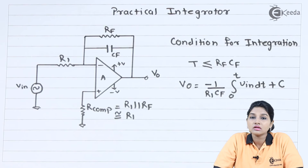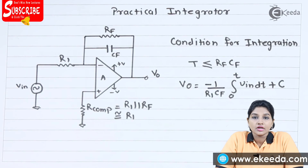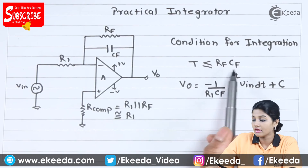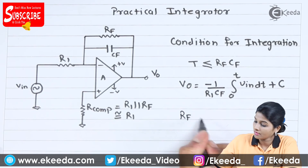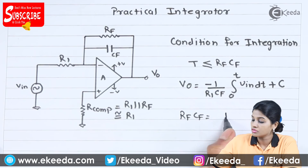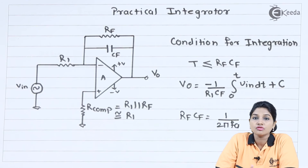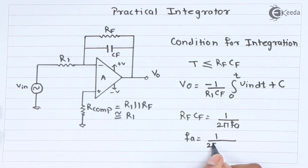Now let's look at the condition for proper integration. For proper integration of an input signal having time period T, the input signal is required to satisfy the condition: T should be less than RF times CF. From this equation we can calculate the value of FA, which becomes 1 upon 2π·RF·CF.